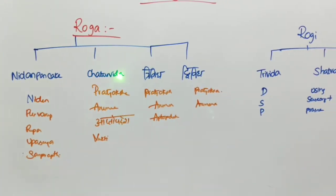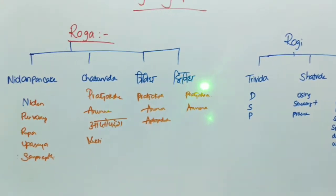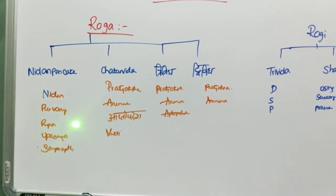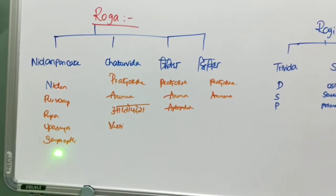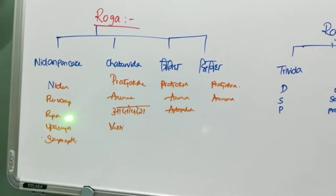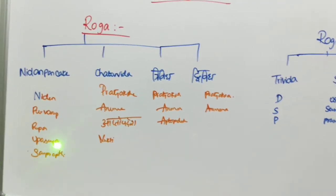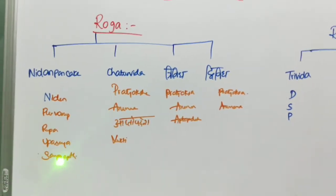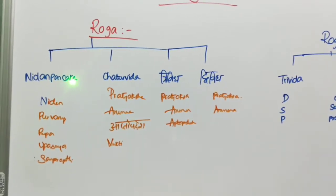In Nidana Panchaka: Nidana, Purvarupa, Rupa, Upashaya, and Samprapti. These are causative factors, prodromal symptoms, signs, what reduces the disease (Upashaya), and Samprapti means the pathogenesis — how the disease manifests in the human body. All of this is dealt in Nidana Panchaka.